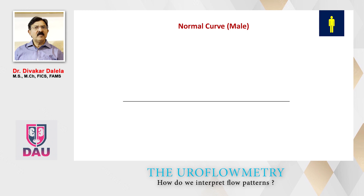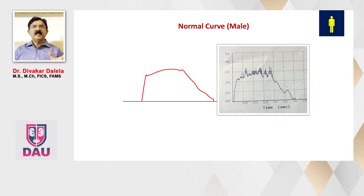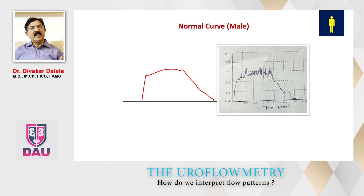If you see a normal curve of a male of a similar age group, the graph will look something like this — again an inverted U, but the base is a little broad. The peak flow rate is a little more than 20 ml per second, and the time taken by a male is also longer, about 25 to 30 seconds to empty the bladder. This differentiation between male and female you should first understand.